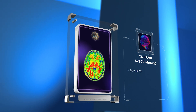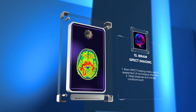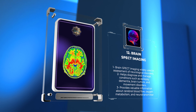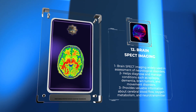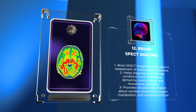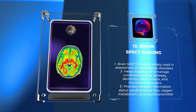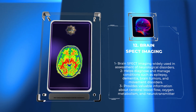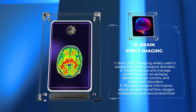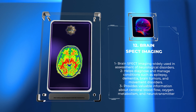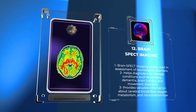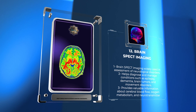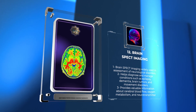Brain SPECT imaging is widely used in the assessment of various neurological disorders. It helps in the diagnosis and management of conditions such as epilepsy, dementia, brain tumors, and movement disorders. Brain SPECT provides valuable information about regional cerebral blood flow, oxygen metabolism, and neurotransmitter systems, enhancing the understanding of brain function and pathology.